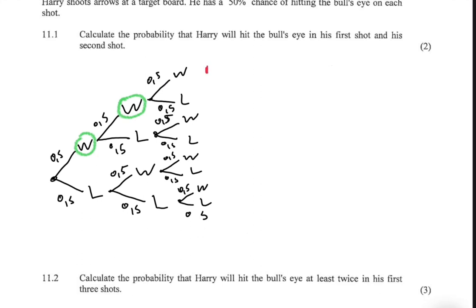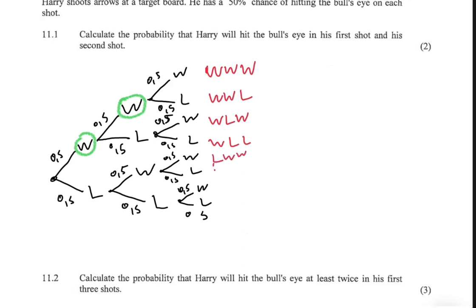At the end of the branches we have all eight possible outcomes: win-win-win, win-win-loss, win-loss-win, win-loss-loss, loss-win-win, loss-win-loss, loss-loss-win, and loss-loss-loss.